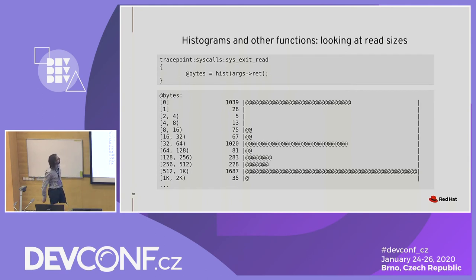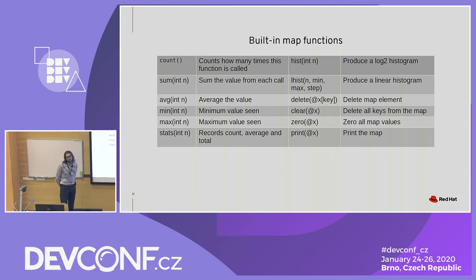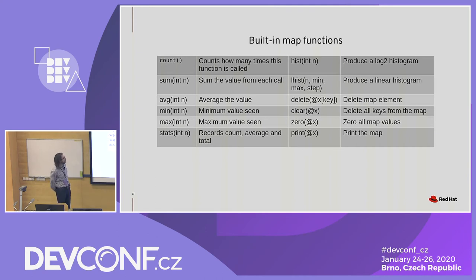As you can see, it doesn't take much code and you already have some nice analysis — just a couple of lines of code. There are a few other functions like that that BPF trace provides. We've already seen count() and hist(). There's also sum(), which adds up all the values it has received as arguments. avg() does the same but calculates the average. min() and max() remember the minimum and maximum values. stats() is basically count, sum, and avg together. There's also a linear histogram, lhist(), which is sometimes more useful. And there are a few more ancillary functions to delete, clear, or zero the maps, or print them.